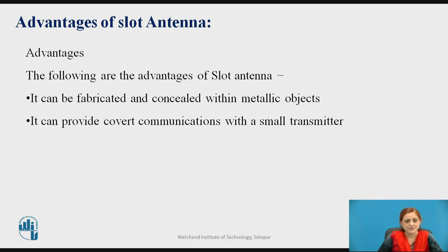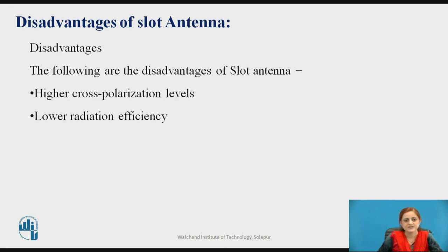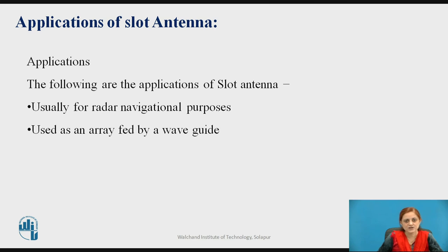Advantages of the slot antenna: it can be fabricated and concealed within metallic objects, and it can provide covert communication with a small transmitter. Some disadvantages include higher cross-polarization levels and lower radiation efficiency. Applications of slot antennas include use for radar and navigational purposes, and as an array fed by a waveguide. Due to Babinet's principle, the slot antenna can be related to the dipole antenna, providing the highest mechanical stability and greater communication applications.